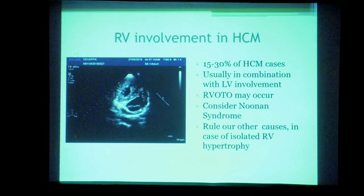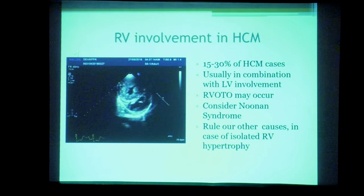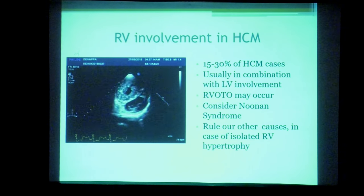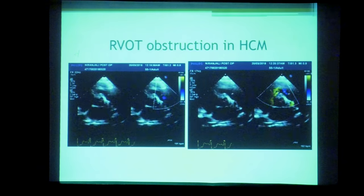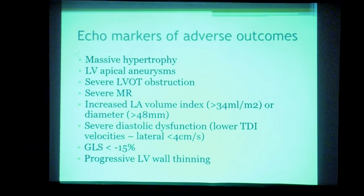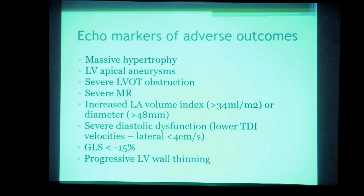Echocardiographic markers of adverse prognosis in HCM include: massive septal hypertrophy, apical aneurysms, severe LVOT obstruction, severe MR, increased LA diameter or volume, severe diastolic dysfunction (tissue Doppler lateral annulus E' <4 cm/s), decreased global longitudinal strain, and progressive wall thinning.